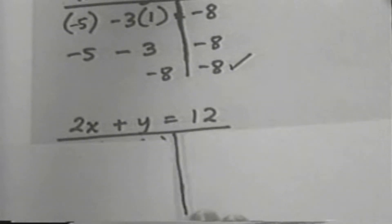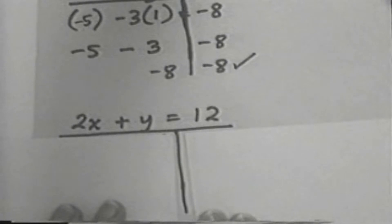So here's our equation with the T format below it, 2x plus y equals 12. That means we have 2 times the x number plus the y number on the left, 12 on the right.